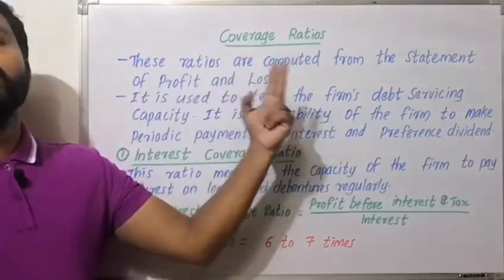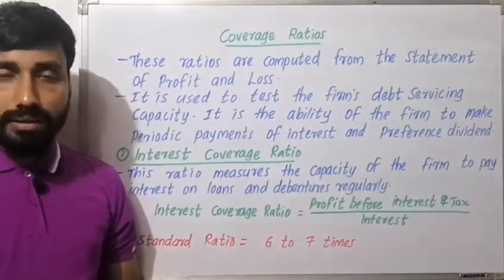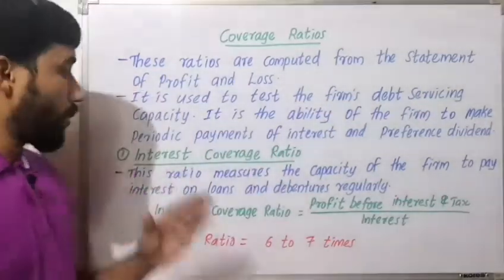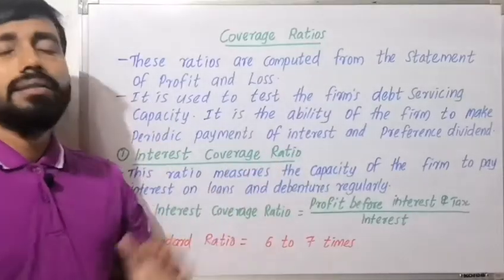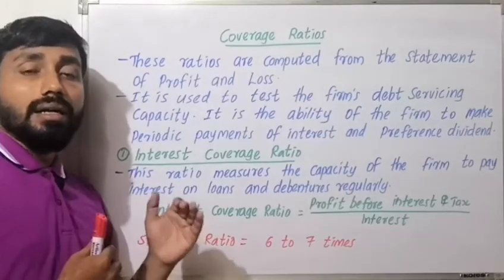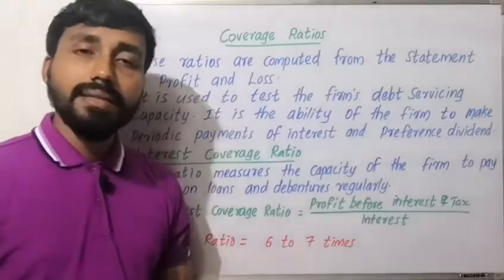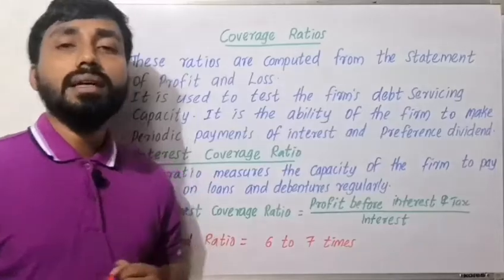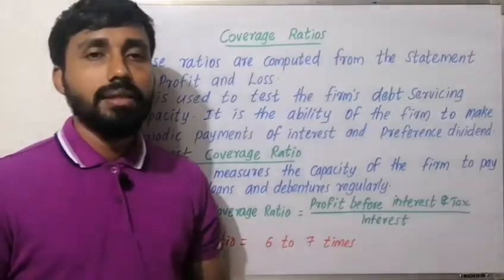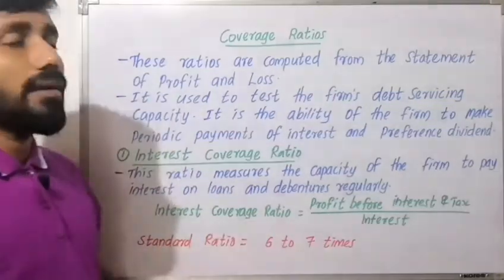There are two types of coverage ratios. The first is the interest coverage ratio. The interest coverage ratio measures the capacity of the firm to pay interest on loans and debentures regularly. The interest coverage ratio is calculated as profit before interest and tax divided by interest.